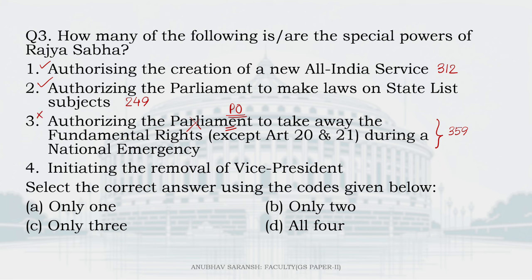Statement 4: initiating the removal of the Vice President. Yes — Article 67, Clause B. The resolution to remove the VP can be moved only in the Rajya Sabha, where it must be passed by an effective majority, and then in the Lok Sabha by a simple majority. So statement 4 is also correct. How many are special powers? Three — 1, 2, and 4. The right answer is C.